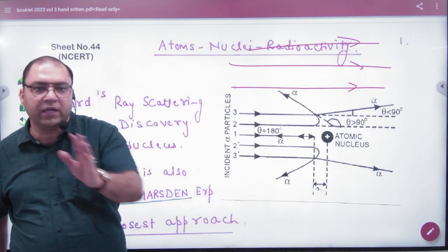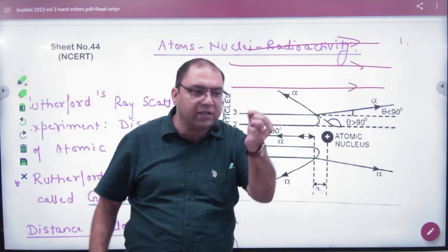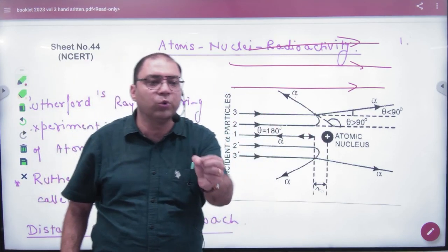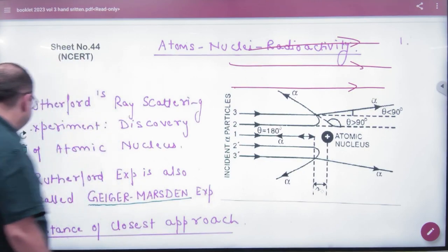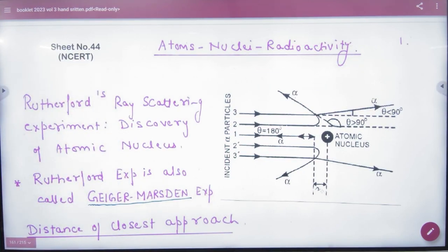So this has a heavy particle named atomic nucleus. Rutherford experiment, another name is Geiger Marsden experiment. Underline and highlight it in your board paper NCERT or in competition.